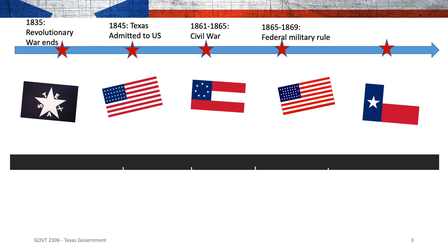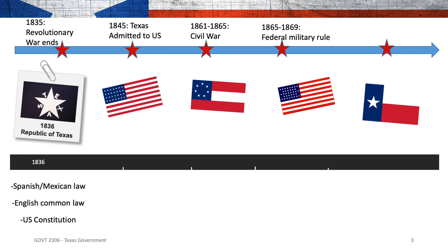Let's talk about the first Constitution of 1836. The Revolutionary War ended and Texas was free from Mexico's rule. In 1836, Texas drafted their first Constitution — the Constitution of the Republic of Texas. It was heavily influenced by Spanish and Mexican law, because that's what the people living in the Texas territory knew. The Republic of Texas had grown up with the tenets of Spanish and Mexican law, like property rights for women, which came from Spanish law.